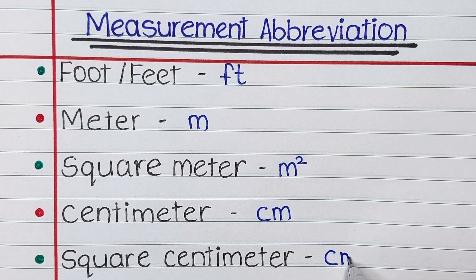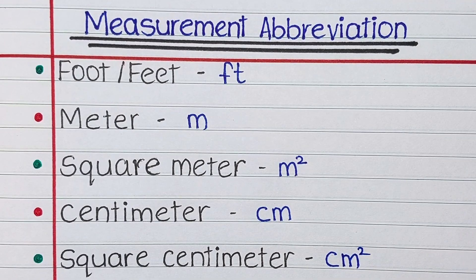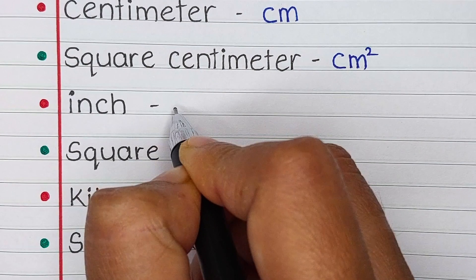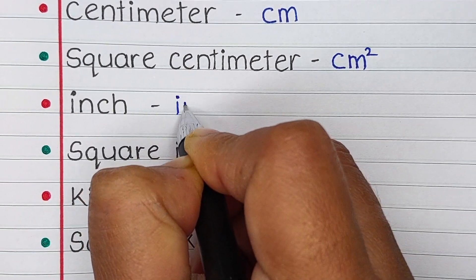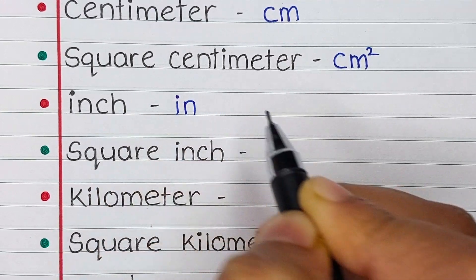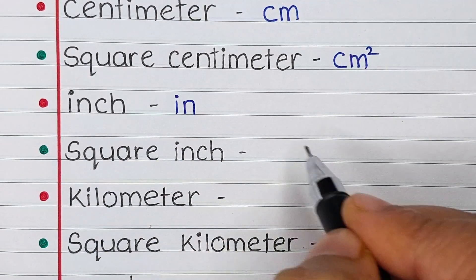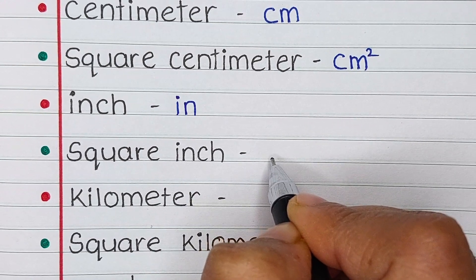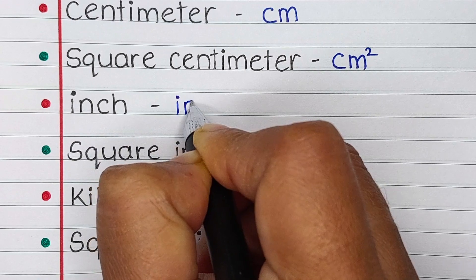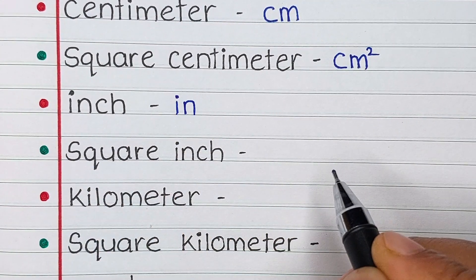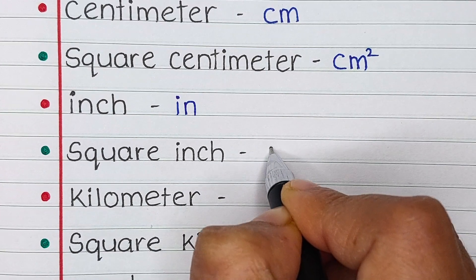Centimeter is written as small letter c and small letter m. Next is square centimeter. This particular measurement is abbreviated as small c and small m to the power 2. Next up is inch. Inch is abbreviated as i n.